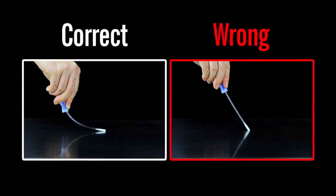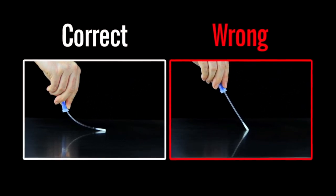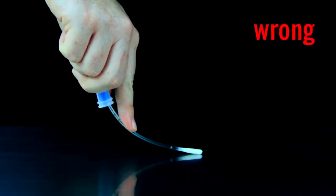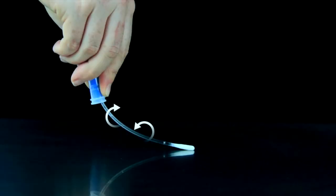This maximizes sample collection and improves accuracy of test results. Be sure not to touch the swab shaft while collecting sample. Touching the swab shaft contaminates the test and will produce inaccurate results. Rotate the swab tip while collecting sample to ensure maximum sample collection.